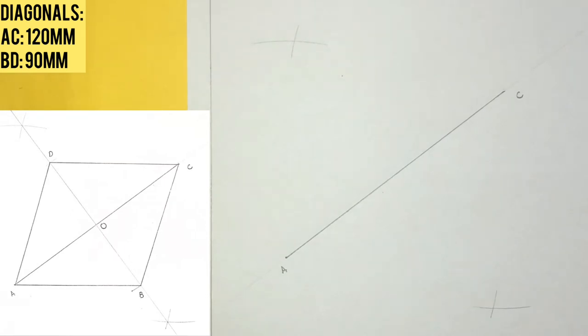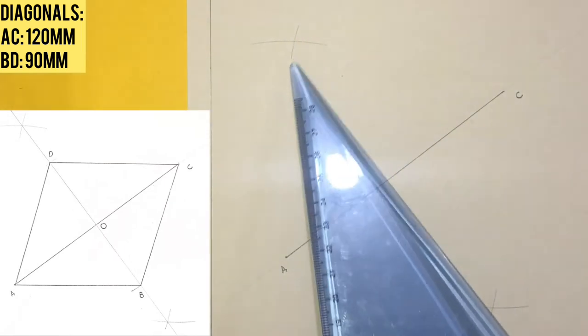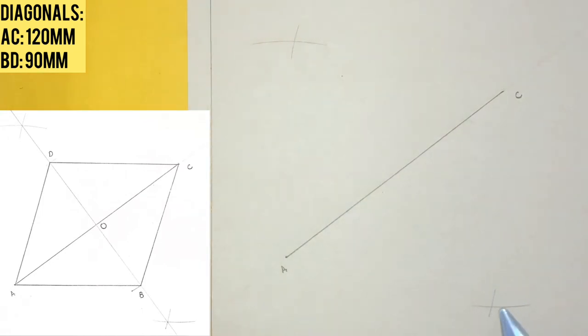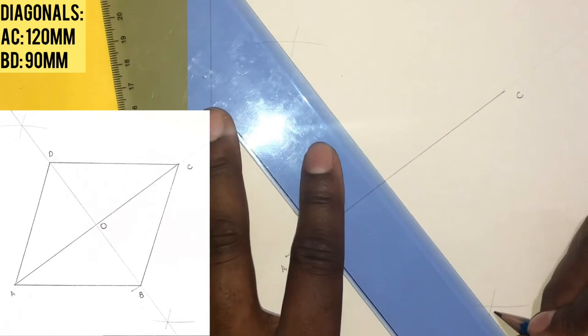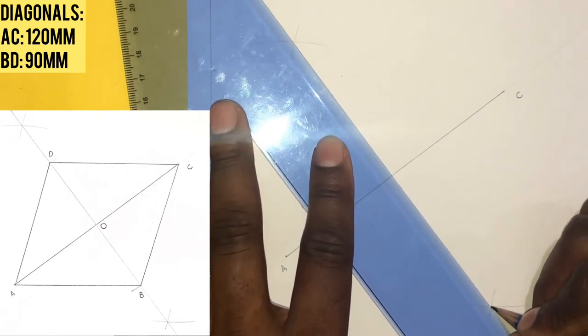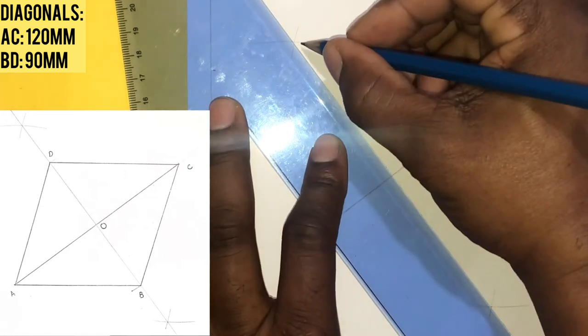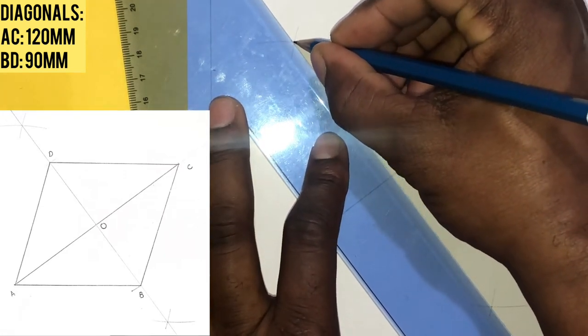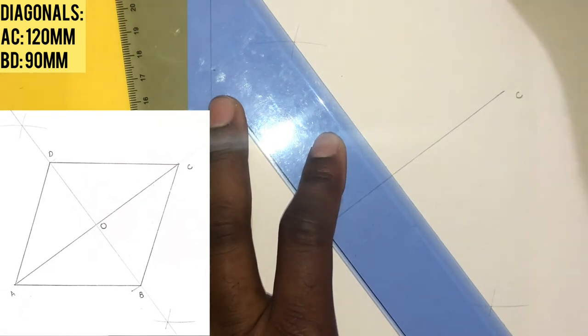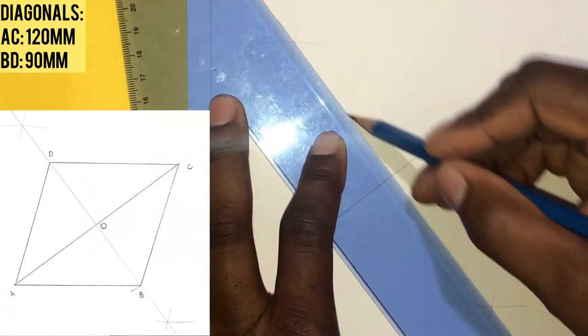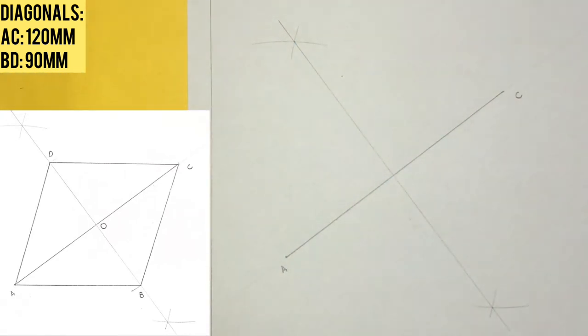I will now draw a line to connect the intersection of both arcs. Now my shorter diagonal, my longest diagonal AC is 120 and the shorter diagonal for the rhombus is gonna be 90 millimeters.